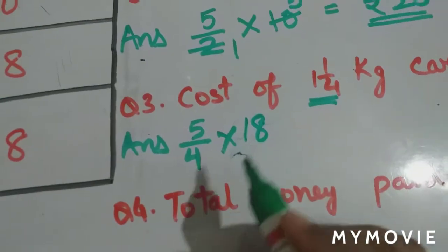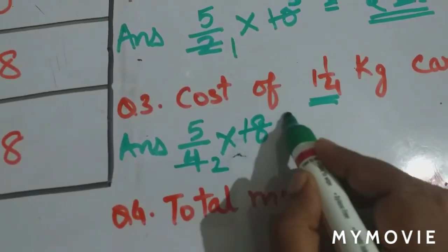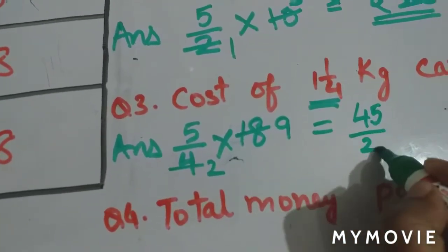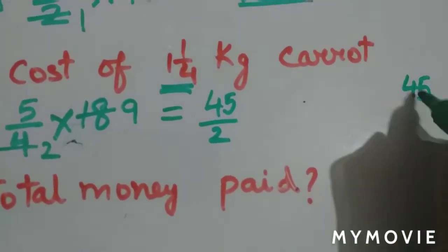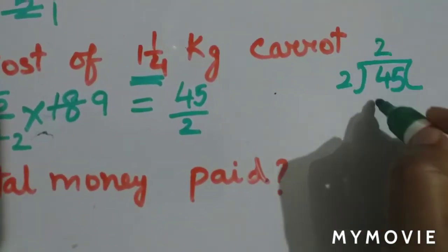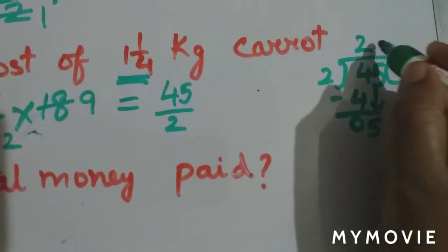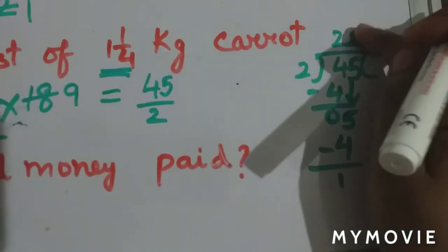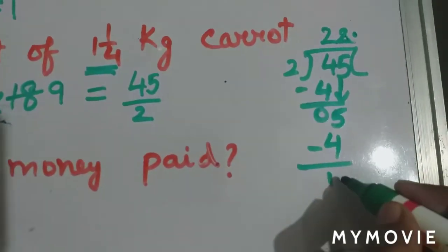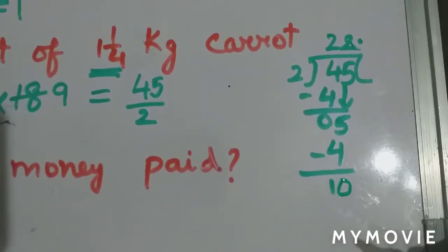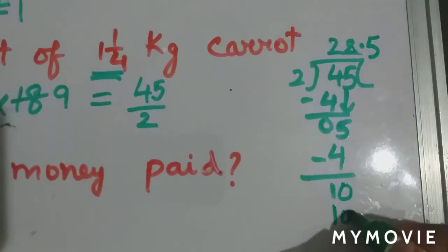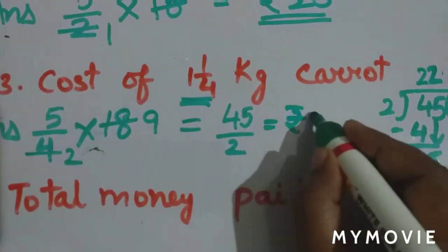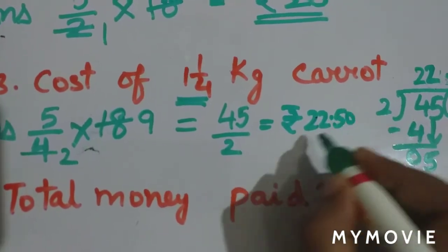Now we reduce this: 2 twos are 4 and 2 nines are 18. Now we get 5 nines are 45 divided by 2. In the rough work you can divide 45 by 2: 2 twos are 4, then 5 will come down, again 2 twos are 4, 1 is here. We put a decimal, that is simply a dot, and we'll put 1 zero. Now 2 fives are 10, so you get the answer as 22 rupees and 50 paise, rupees 22.50.